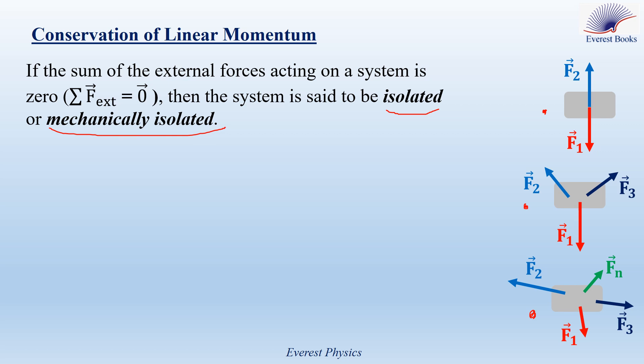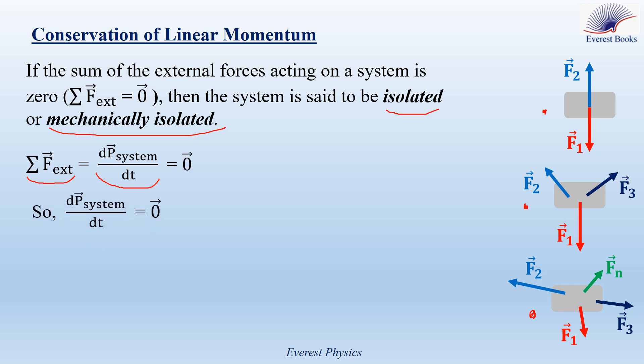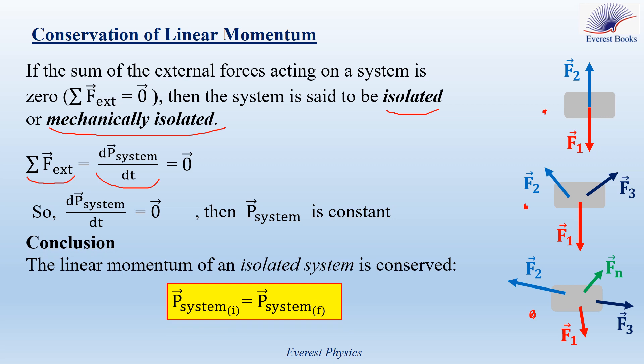What is the consequence of an isolated system? By applying the general expression of Newton's second law — the sum of external forces equals the time derivative of linear momentum — if the vector sum of these forces is zero, we can deduce that dP_system/dt is also equal to zero. When the derivative of a quantity is zero, that quantity must be constant or conserved. So we conclude that the linear momentum of an isolated system is conserved: P_system initial equals P_system final.